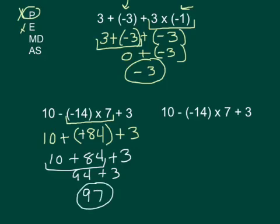Now, let's look at another way to do it. What if you had wanted to add the opposite first, and you decided you would do 10 plus 14 times 7 plus 3? Would you have gotten the same answer? Yes, you would have. Let's do our multiplication.